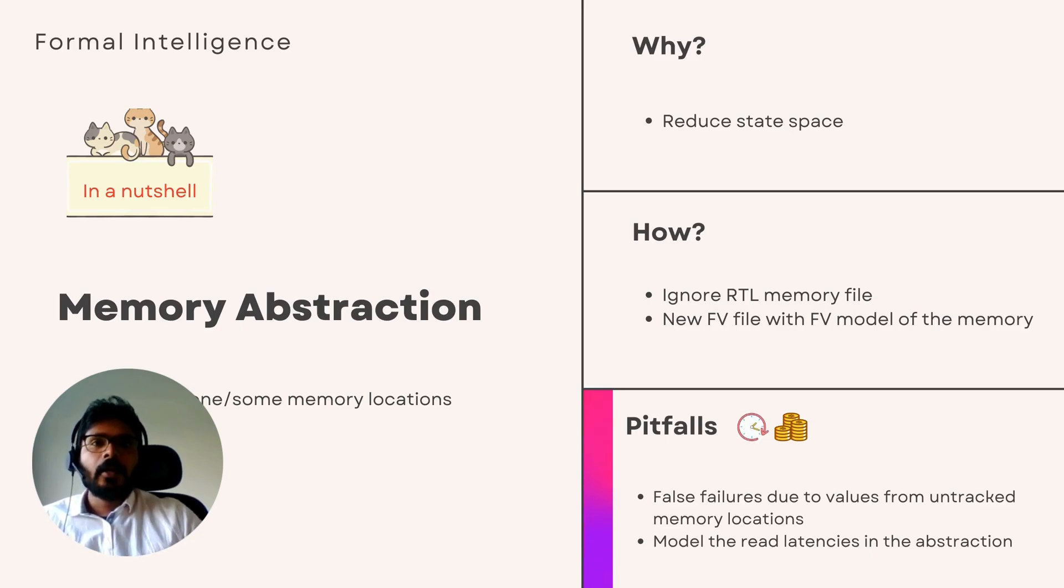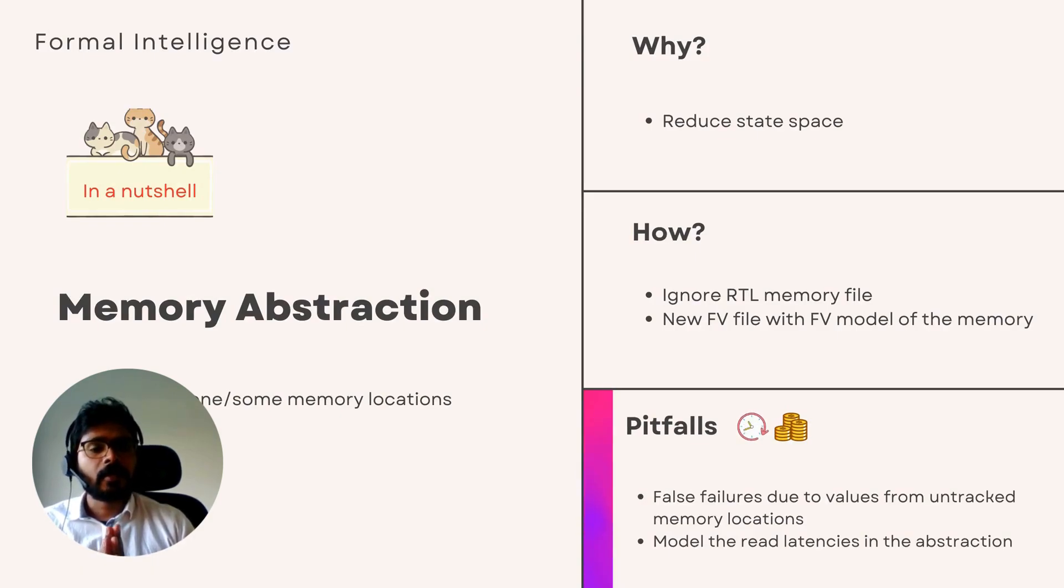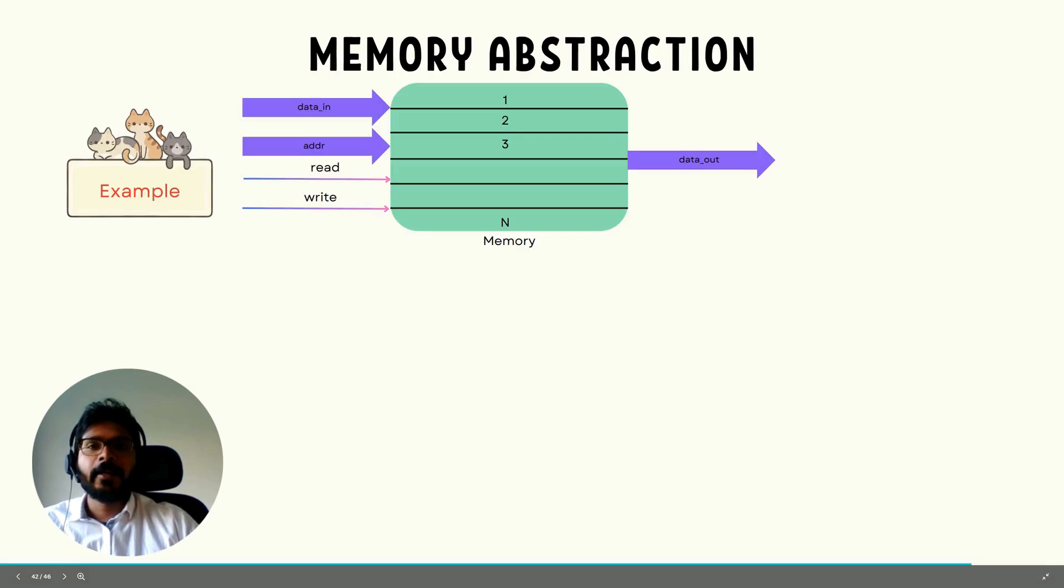So are there any problems with these kind of abstractions? Yes. If you don't model the location other than the ones which you are tracking, you will see false failures in your property if the property relies on data from untracked locations. That's one. Is there any other issue? There is another issue with timing. If your memory has a specific read or write latency, let's say one clock or two clocks, then your abstraction should also make sure that you maintain that latency in your model.